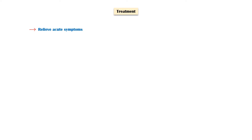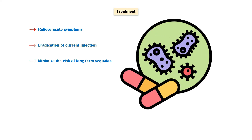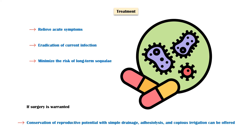Treatment of pelvic inflammatory disease is aimed at relieving acute symptoms, eradicating the current infection, and minimizing the risk of long-term sequelae. Treatment with antibiotics alone is successful in about 33-75% of cases. If surgery is warranted, conservation of reproductive potential with simple drainage, adhesiolysis, and copious irrigation can be offered.